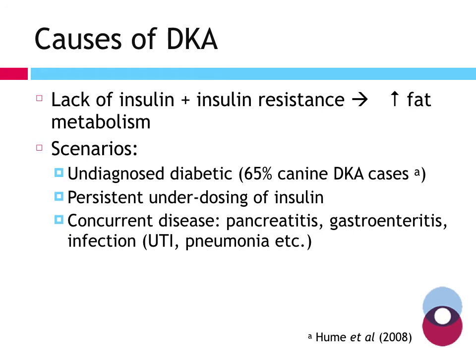Why does a patient develop DKA? It's this lack of insulin, or insulin resistance, or both. Main scenarios include undiagnosed diabetics presenting for the first time — about two thirds of dog DKA cases are newly diagnosed diabetics. We may also have a patient being treated but receiving chronically too little insulin. Or a patient whose insulin dose was appropriate but a concurrent condition such as pancreatitis, gastroenteritis, or infection has increased insulin resistance, meaning the current dose is no longer sufficient.